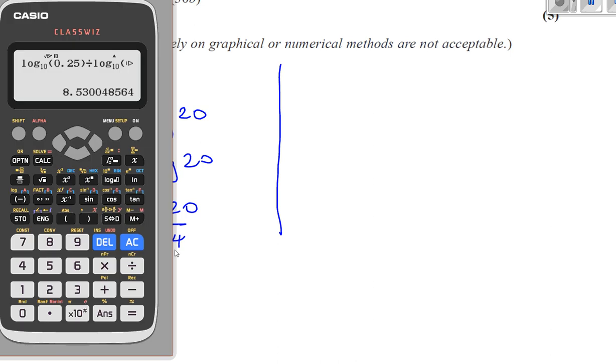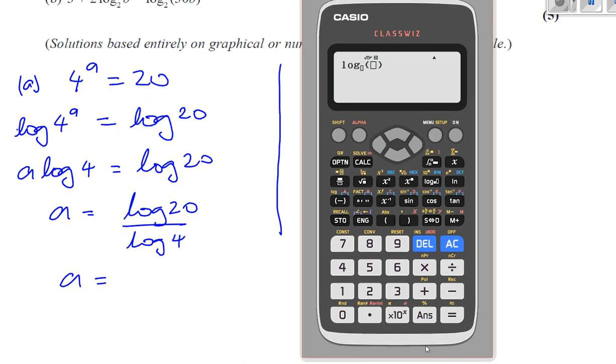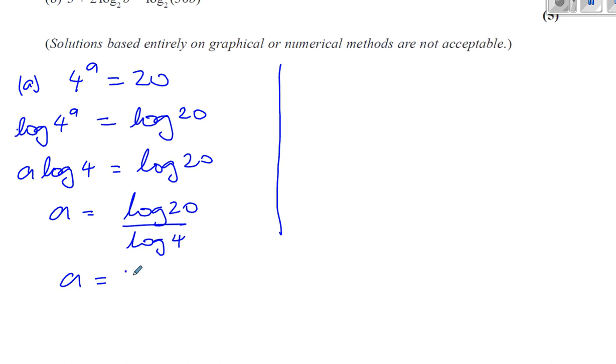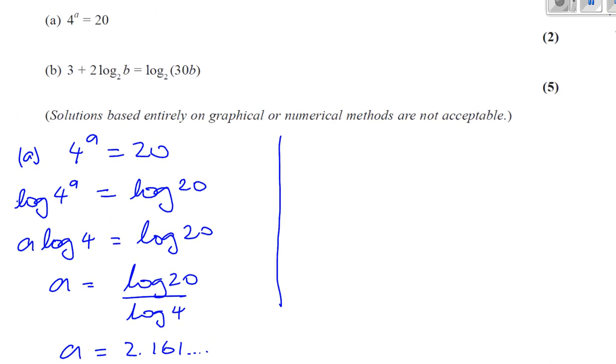So you're going to have log to the base 10 of 20 divided by log to the base 10 of 4. And the answer will be 2.161, which is to 3 significant figures 2.16. Okay, there's the answer, to 3 significant figures as they asked.